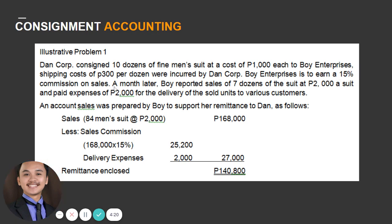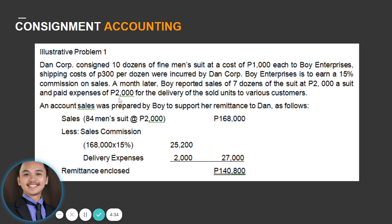The 15% commission based on sales is an expense account from the consignor's point of view, forming part of selling and administrative expenses. The $2,000 delivery fee paid by the consignee is a freight-out cost, which is also considered an expense account.